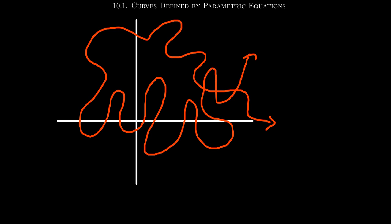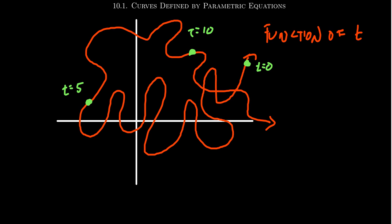Is this path a function? Well, it certainly doesn't pass the vertical line test or the horizontal line test, and there's no diagonal line that would intersect this graph in only one location. But the graph is a function if we think of it as a function of time t, because at any moment in the journey we could determine where our ant was located. The ant's current location is a function of time, and hence the path traversed by the ant is a function of time.